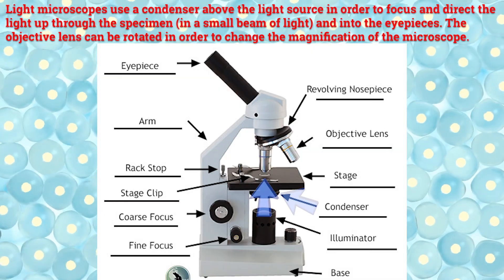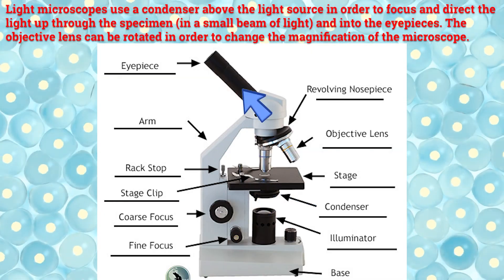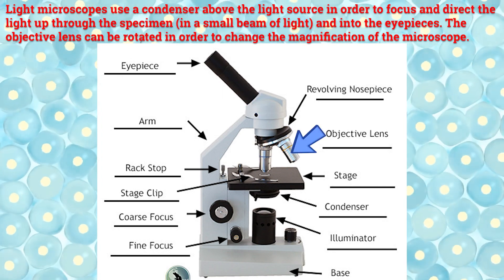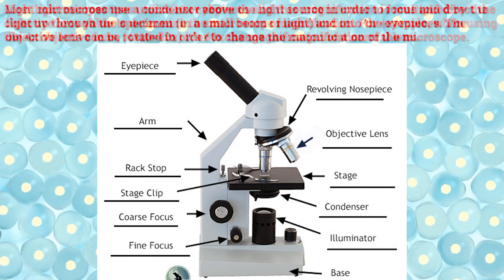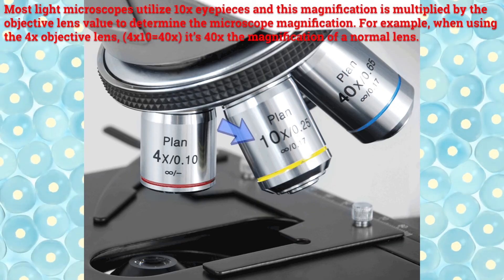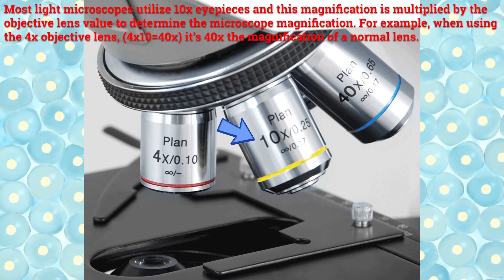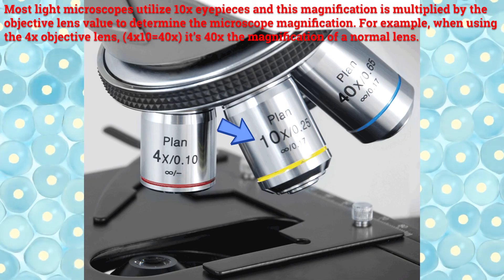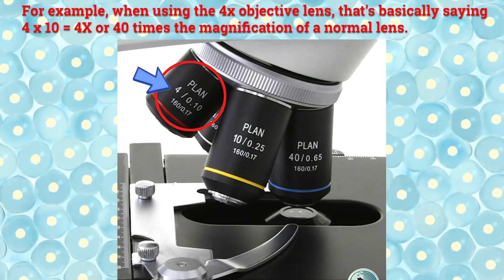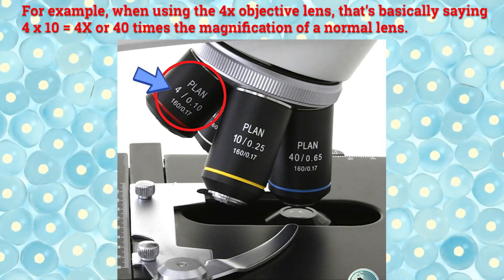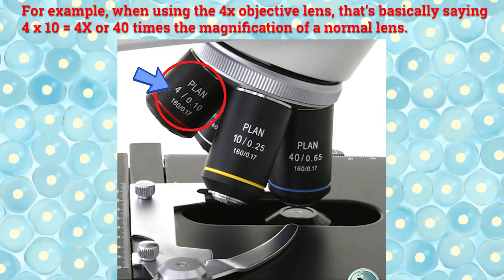Light microscopes use a condenser above the light source to focus and direct the light up through the specimen in a small beam and into the eyepieces. The objective lenses can be rotated to change the magnification of the microscope. Most light microscopes utilize 10x eyepieces, and this magnification is multiplied by the objective lens value to determine total microscope magnification. For example, when using the 4x objective lens, that's 4 times 10 equals 40x — or 40 times the magnification of a normal lens.